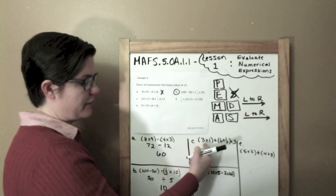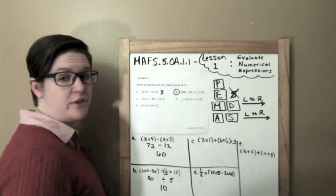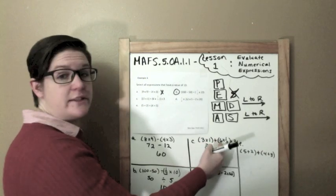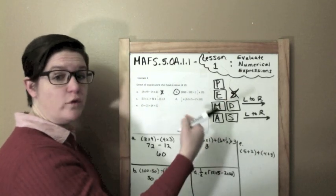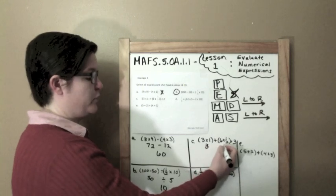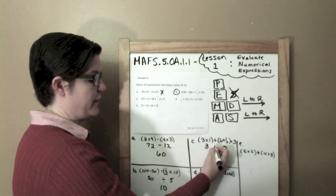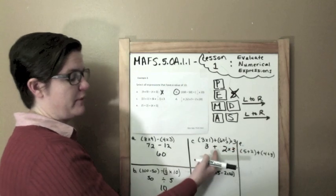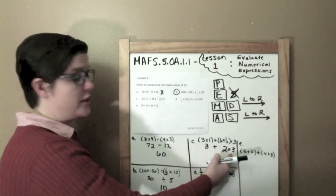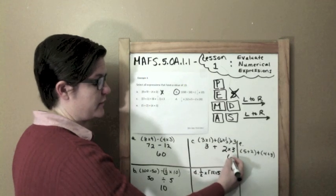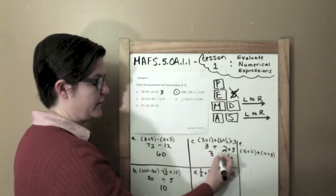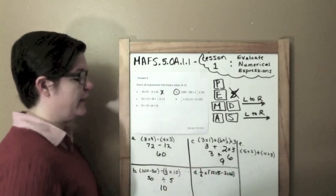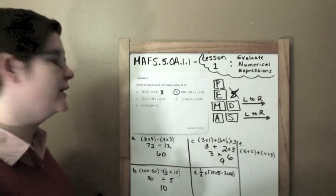C. I've got parentheses, parentheses. I'm going to solve those first. 3 times 1 is 3. 6 times 1 third would be 6 over 3, which would be 6 divided by 3, which is 2. And I'm going to bring down my symbols and my numbers. Now I've got addition and multiplication. Multiplication comes first. So 2 times 3 is 6. Bring it down. And 3 plus 6 is 9. 9 is close to 10, but it is not 10.